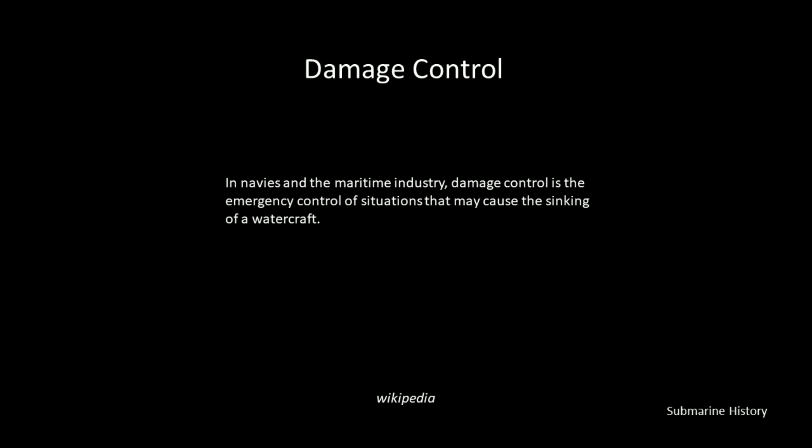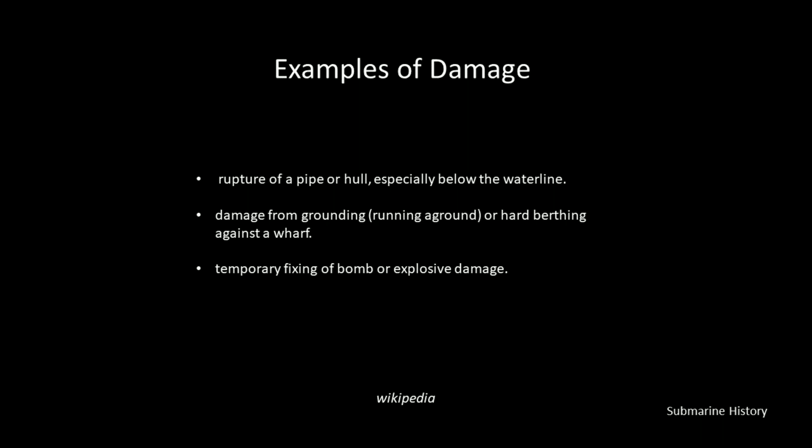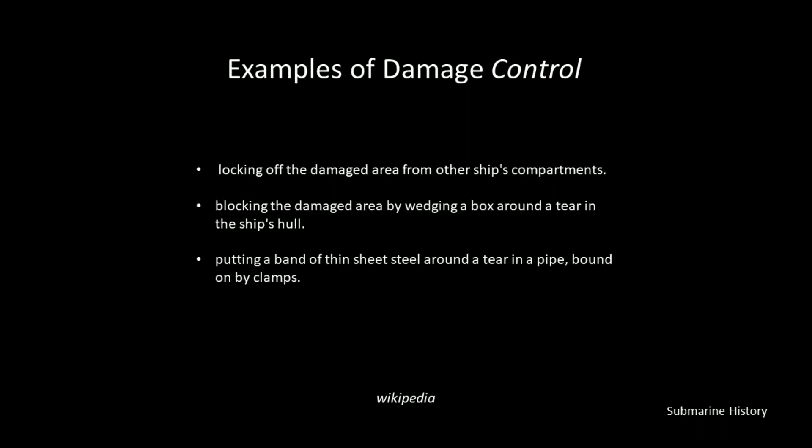Damage control. So in navies and the maritime industry, damage control is the emergency control of situations that may cause the sinking of a watercraft. Examples of damage are ruptures to pipes or the hull, especially below the waterline, damage from grounding or running aground, hard berthing against a wharf, or temporary fixing of bomb or explosive damage. Examples of damage control include locking off the damaged area from other ship's compartments, blocking the damaged area by wedging a box around a tear in the ship's hull, or putting a band of thin sheet steel around a tear in a pipe bound on by clamps.